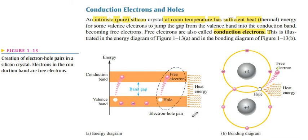The next point is conduction electrons and holes in pure silicon crystal. At room temperature, the electron gets sufficient energy to jump across the energy gap and becomes a free electron. This is also shown in the diagram of what happens in the silicon crystal.